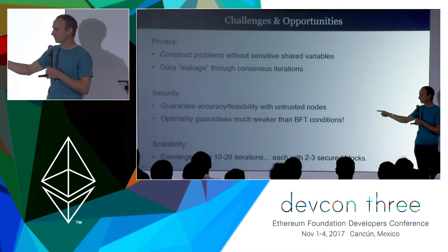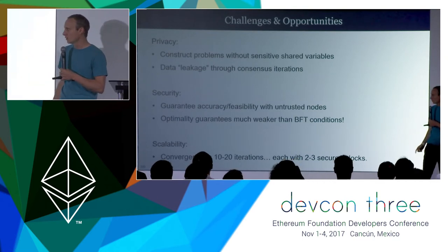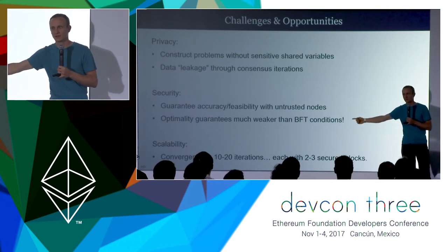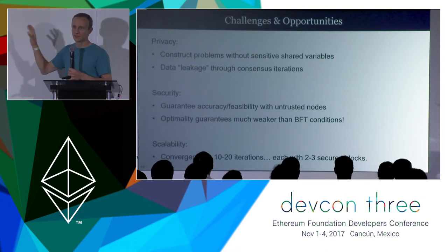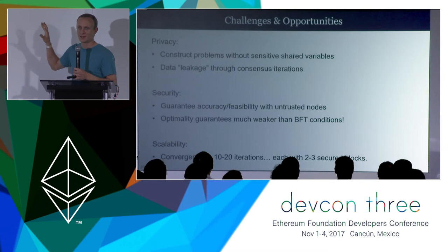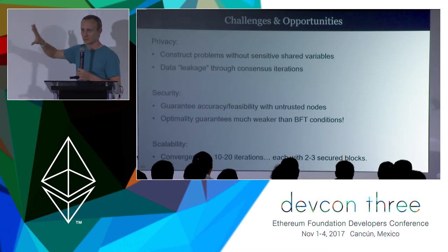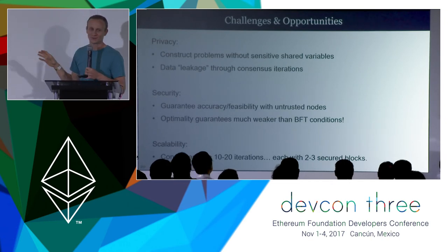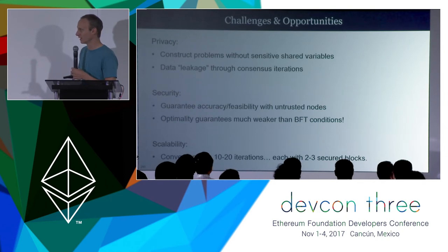On security, we've been working on provable guarantees of feasibility with untrusted nodes. One big comment here is that these proofs generally have much weaker conditions than BFT would give. In these constrained systems, your ability to guarantee feasibility is going to be dependent on the topology of how faulty nodes are connected. In general, because it's dependent on that topology, we can't guarantee the same one-third proof against attack that BFT systems generally have.